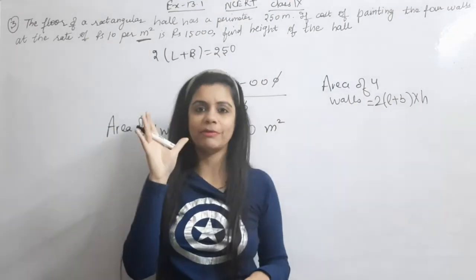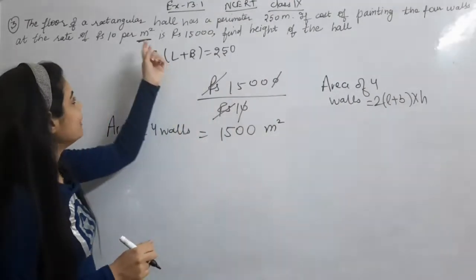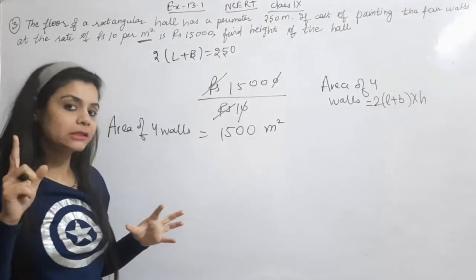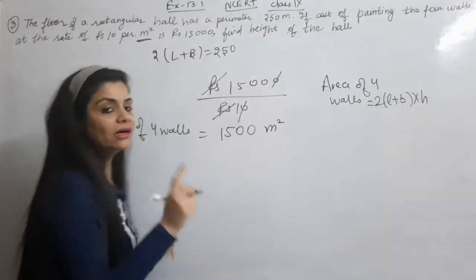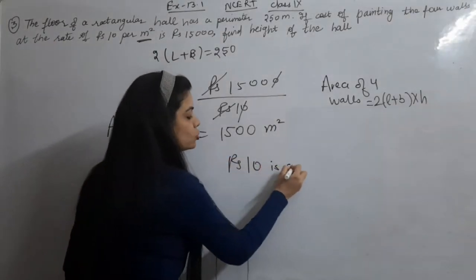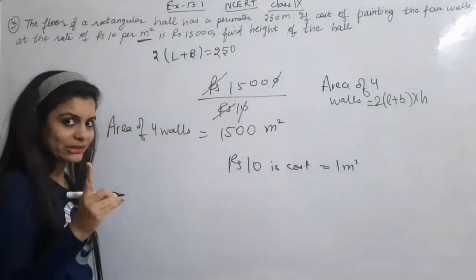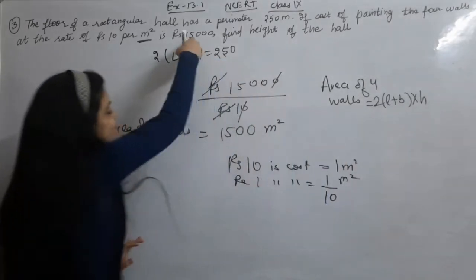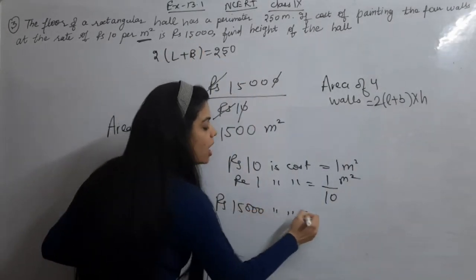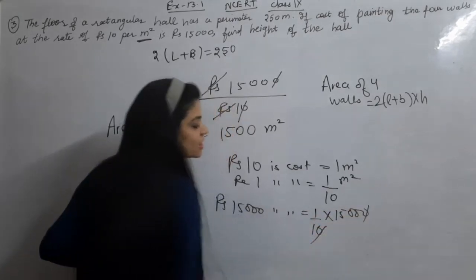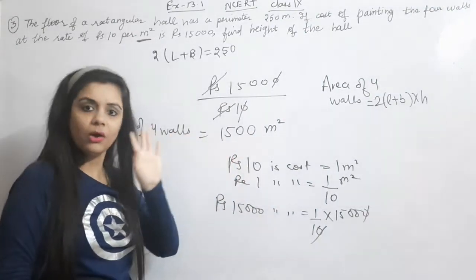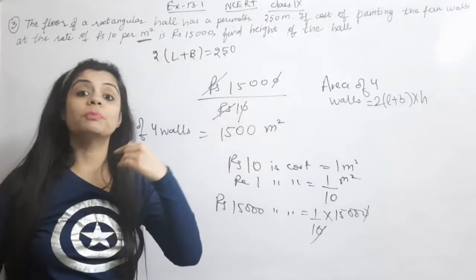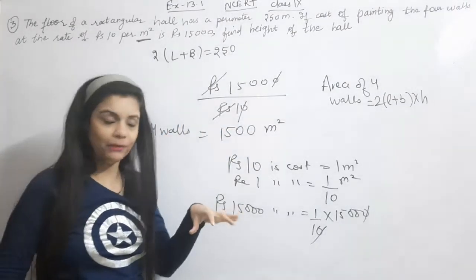If you want to understand the logic behind this: the total cost of rupees 15,000 is to paint 4 walls, and rupees 10 per meter square is the rate. Using the unitary method — rupees 10 is the cost of painting 1 meter square, so rupees 1 is the cost of 1 upon 10 meter square, and rupees 15,000 will be the cost of 1 upon 10 into 15,000, which comes out to be 1,500 meter square.